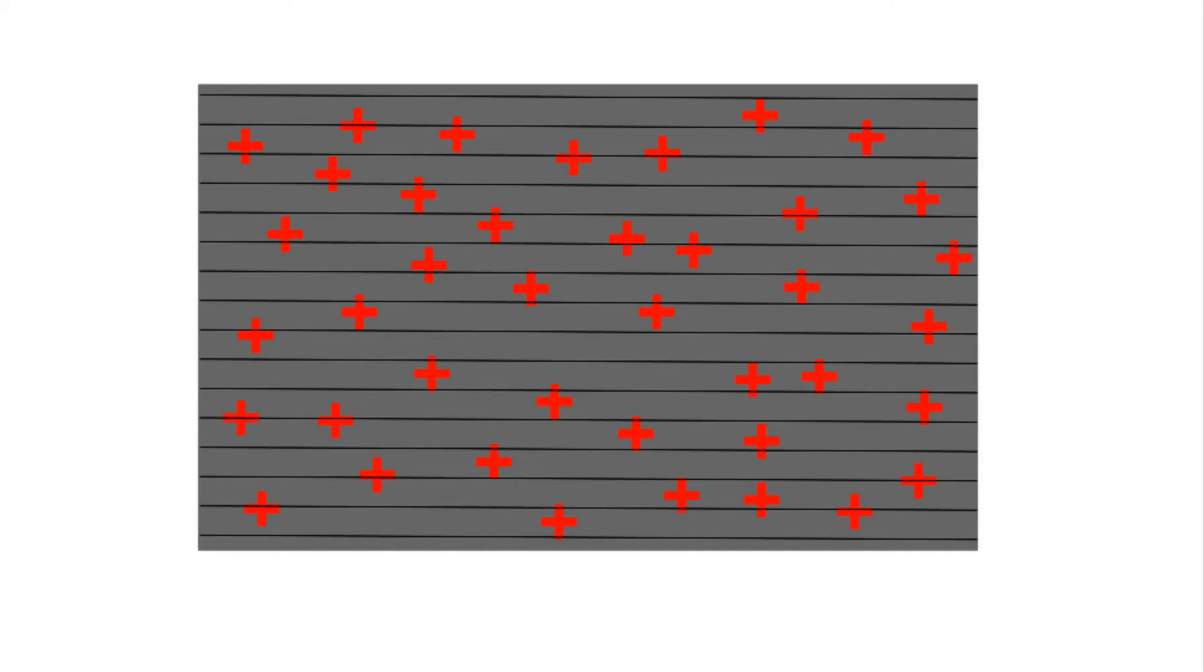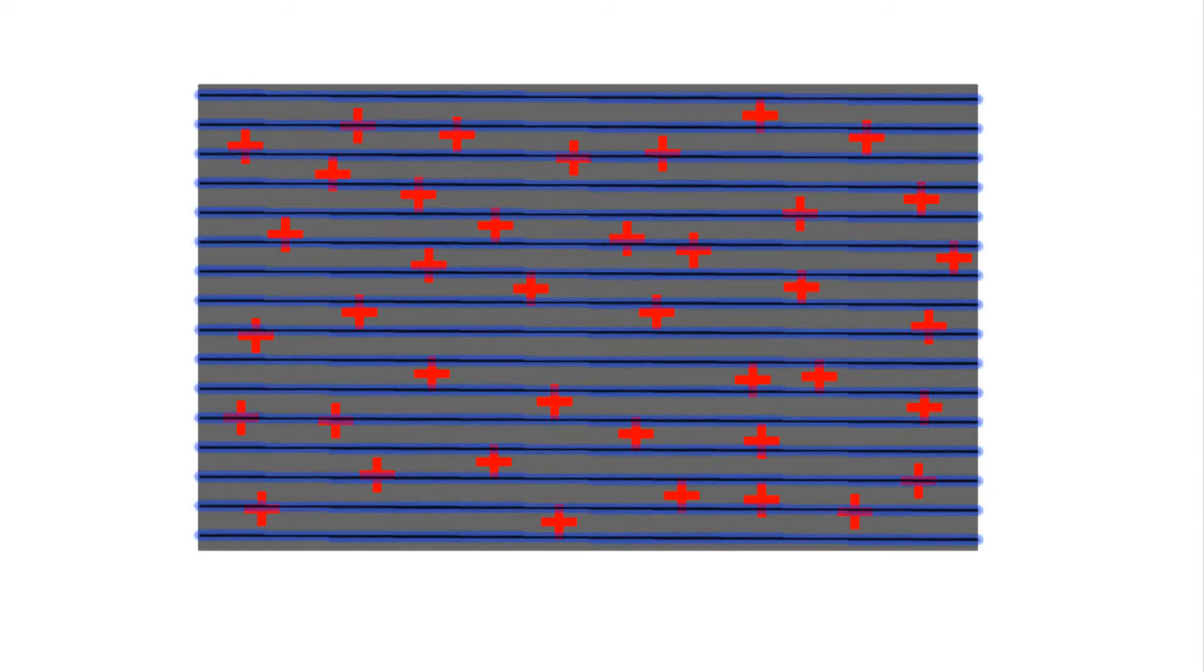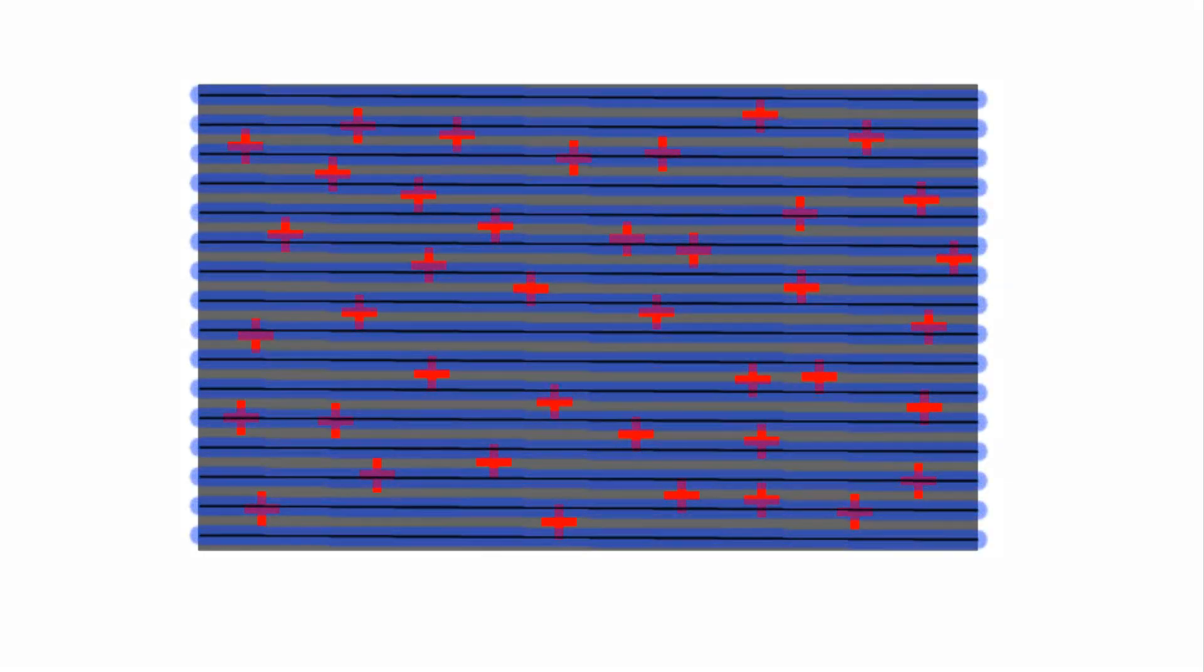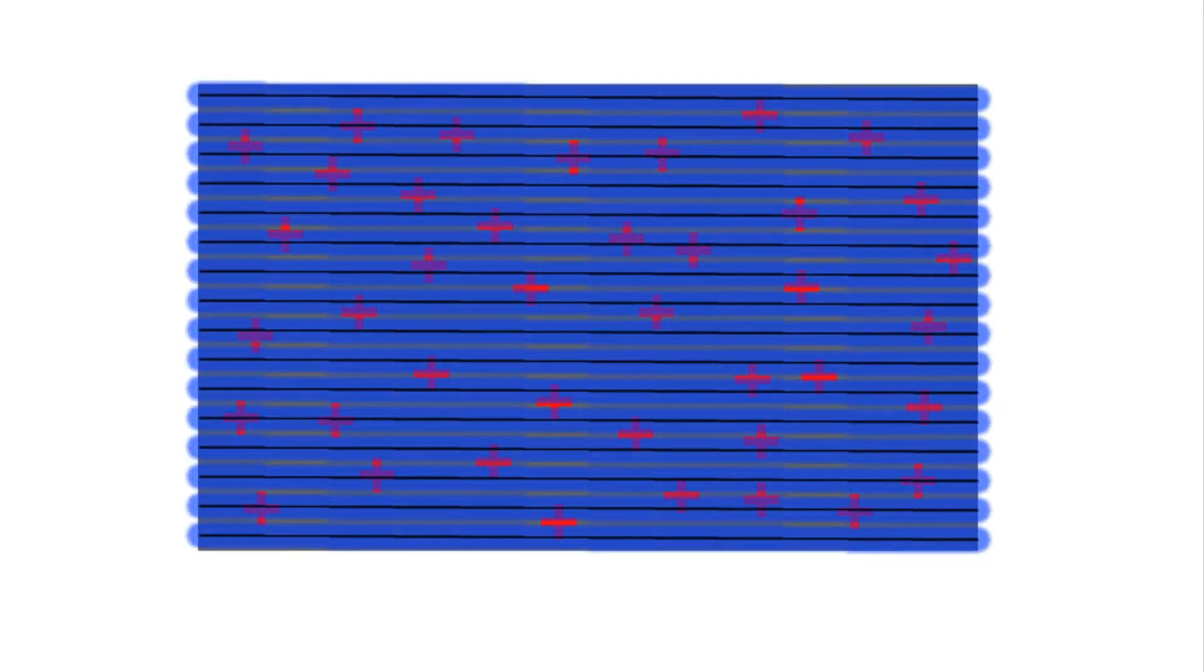But if we make that grid more negative, you can see that it's getting harder to see the plate or that positive charge on the plate. And if we make it negative enough, we really can't see the plate at all.